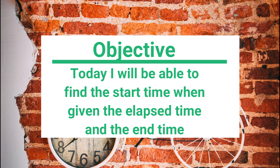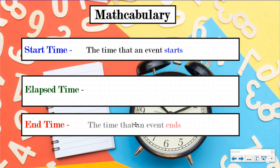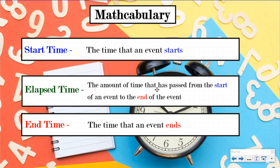Let's take a look at our math vocabulary just to review what we learned last lesson. You don't need to write these down again because you already wrote them down, but it's just good to quickly review — especially if you just kind of hopped in and didn't do the last lesson. The start time is the time that an event starts. The end time is the time that an event ends. And the elapsed time is the amount of time that has passed from the start of an event to the end of an event.